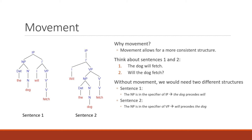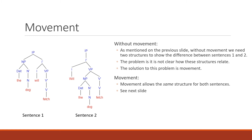Why do we want to represent it as movement? Movement allows for a more consistent structure. Consider sentence one, 'the dog will fetch,' and sentence two, 'will the dog fetch?' Without movement we would need two completely different structures. In sentence one, the NP is the specifier of the IP — 'the dog' is the specifier of the IP. In sentence two, the NP becomes the specifier of the verb phrase, including 'fetch,' and 'will' sits in I-bar. We want something more consistent so we don't need completely separate trees for sentences that are so closely related.